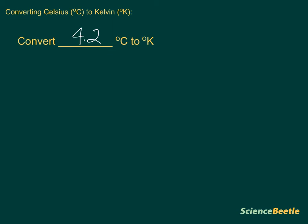Again, if we use that general formula, the Kelvin degrees is going to be equal to your Celsius temperature plus 273. So we'll take that 4.2 degrees and add 273 to that.